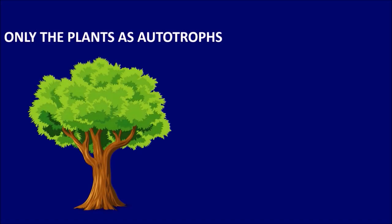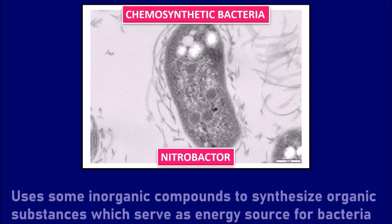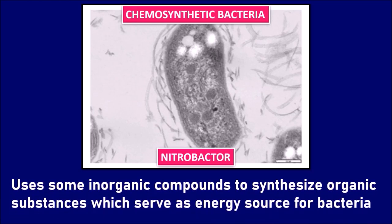In general, only plants are considered as autotrophs. But there are some chemosynthetic bacteria like Nitrobacter, sulfur bacteria, etc. They also have to be considered as autotrophs because they use inorganic compounds like H₂S to synthesize organic substances which serve as an energy source for bacteria.